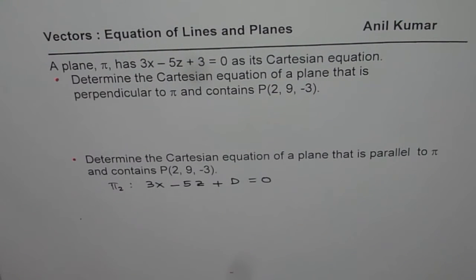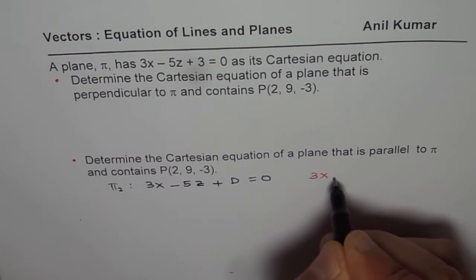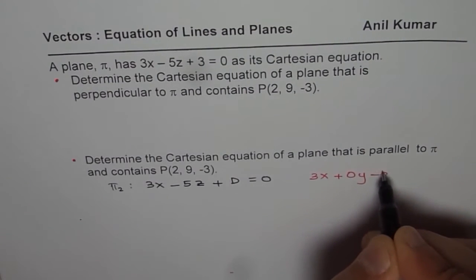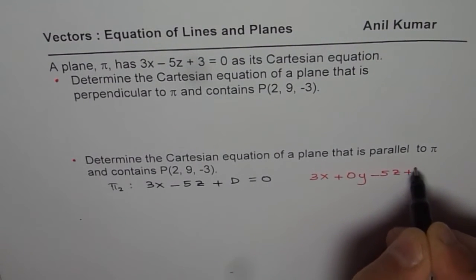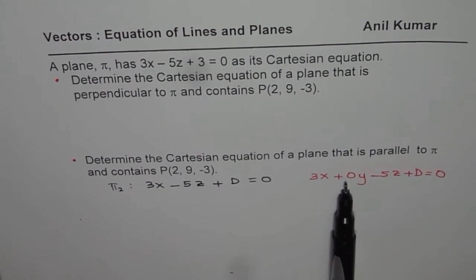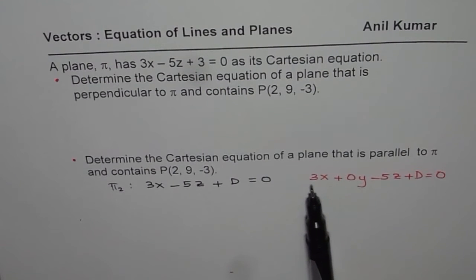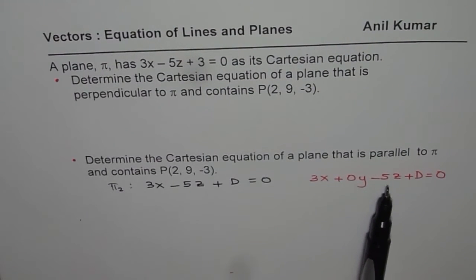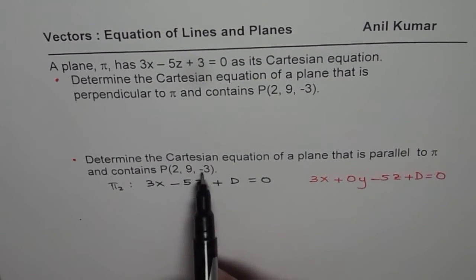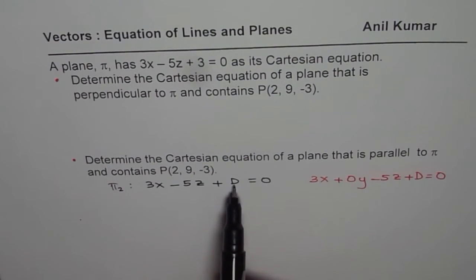Remember when we write like this, it is kind of like this. Let me rewrite this. It is like 3x plus 0y minus 5z plus D equals to 0. Think like this. So the normal is having, the normal is 3, 0, minus 5. So that is the normal for this plane. Now if I substitute 2 for x, 9 for y, and minus 3 for z, I can calculate the value of D.